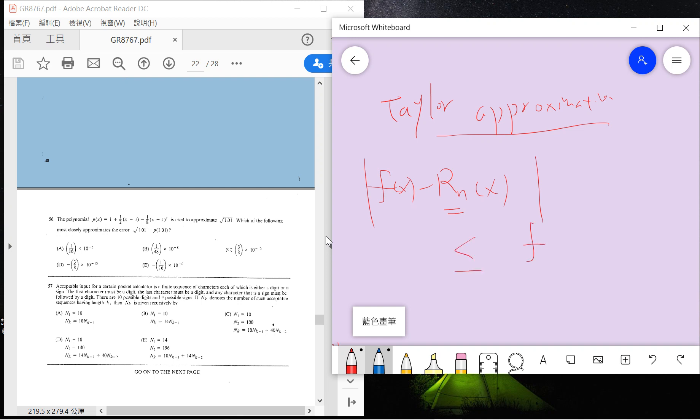It says that the error term, if you use the f of x and the Taylor expansion to the nth order, the error term must be smaller than the n+1 order. So the error must be smaller than the second order.